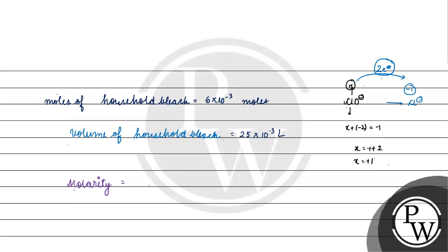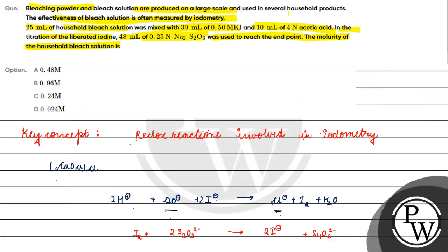Now I have to find molarity. Molarity is number of moles of solute, which is 6 into 10 to the power minus 3 moles, by volume of solution, which is 25 into 10 to the power minus 3 liters. 10 to the power minus 3 cancels. This will be 6 by 25 molar. When we solve this, it equals 0.24 molar, and this will be the final answer for this question. Option C is correct. I hope you understood it well, thank you and all the best.